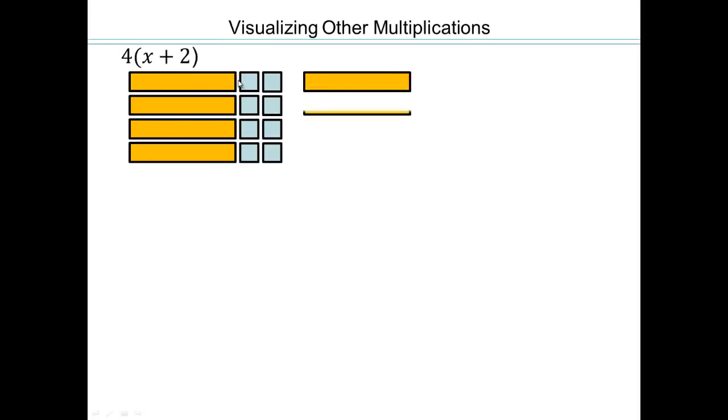Let's take a look and see how we could visualize other multiplications. So let's say 4 times x plus 2, 4 rows of x plus 2. So here's x, and here's 2, 4 rows of that.